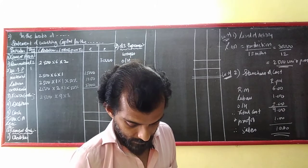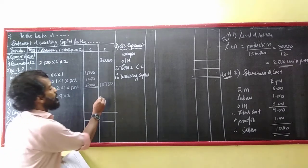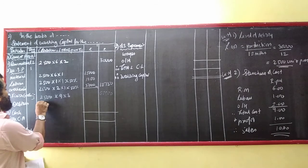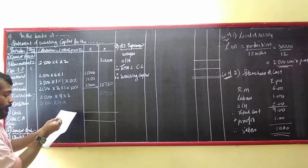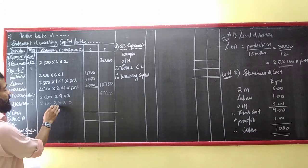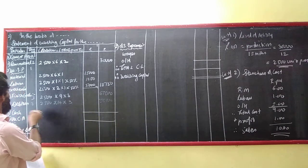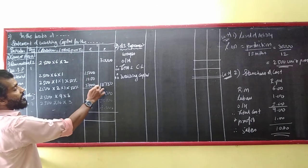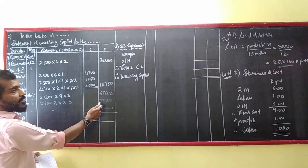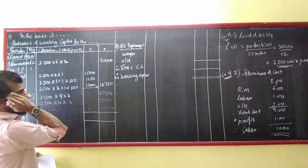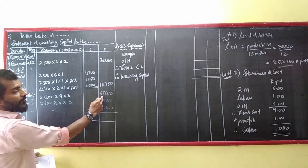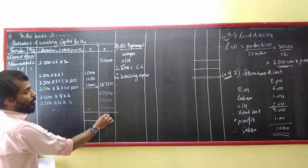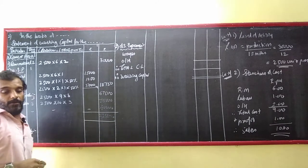Debtors: credit given is 3 months, so 2,500 into 10 into 3 equals 75,000. Now filling up the current assets — 30 plus 10 is 40, plus 6 makes 46, one lakh, one lakh seventy, two lakh ten, total current assets come to approximately 2,31,250.